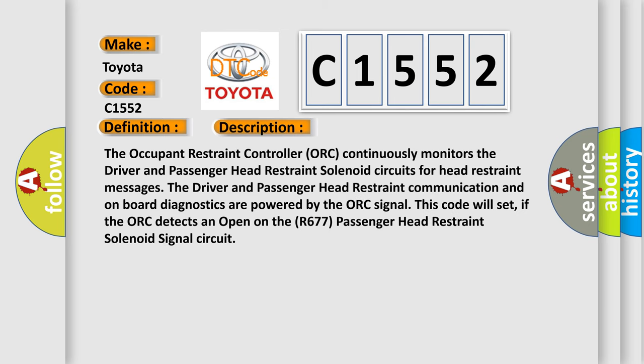And now this is a short description of this DTC code. The occupant restraint controller ORC continuously monitors the driver and passenger head restraint solenoid circuits for head restraint messages. The driver and passenger head restraint communication and on-board diagnostics are powered by the ORC signal. This code will set if the ORC detects an open on the R677 passenger head restraint solenoid signal circuit.